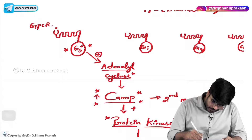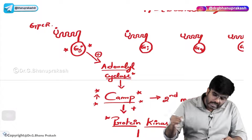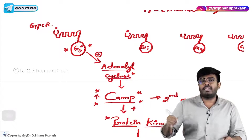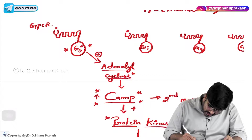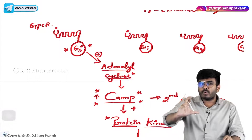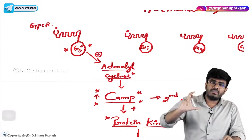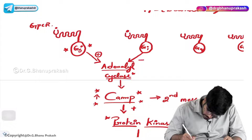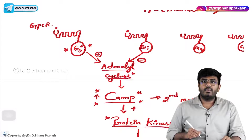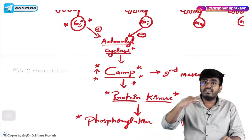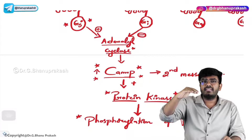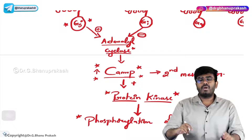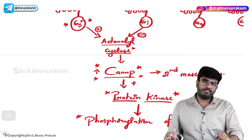In the second scenario, when you stimulate the other type of G protein coupled receptor where the intracellular domain is G inhibitory — whenever you stimulate these receptors, this alpha inhibitory component moves away and by using the energy, it will inhibit adenylyl cyclase. When adenylyl cyclase is inhibited, cAMP levels will go down, protein kinase activity will go down, phosphorylation of proteins inside the cell will go down, and the cell will become inactive.